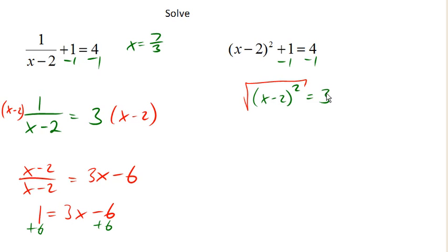Keeping in mind that this thing could have been positive or negative, right? So the square root of the square undoes itself, and we end up with x minus 2. But x minus 2 could either be square root of 3, or x minus 2 could be the negative square root of 3, right?